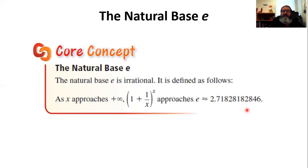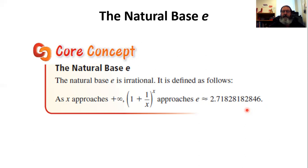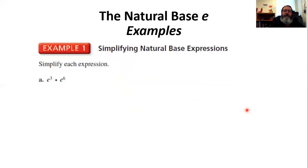So that is the value of E — remember it is a constant, not a variable. It doesn't change; its value is already preset. It is a little bit more than 2.7 — that 2.718281828 goes on forever, doesn't repeat, but we know its fixed value. It is irrational. Now let's look at some examples, because E is going to be used as a base — it's called the natural base E.